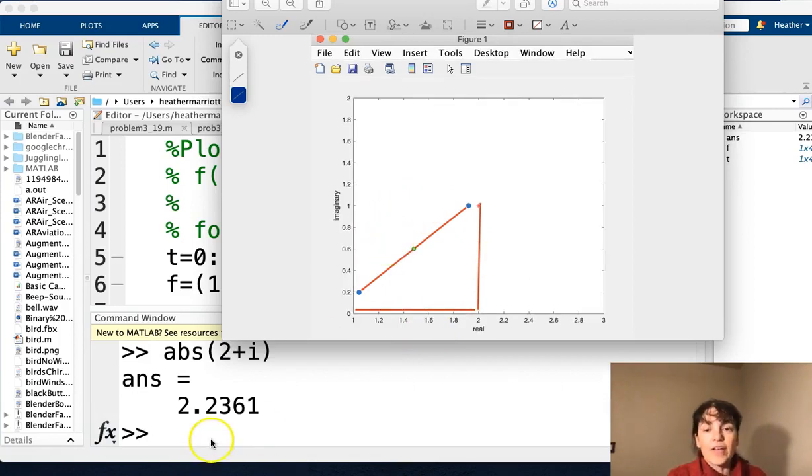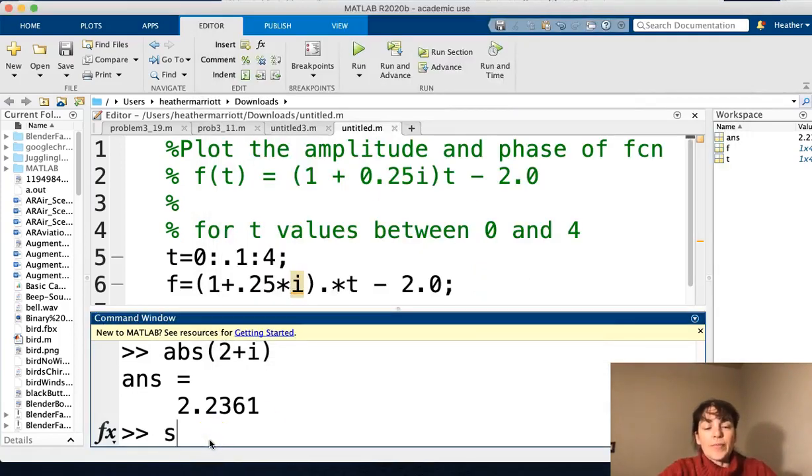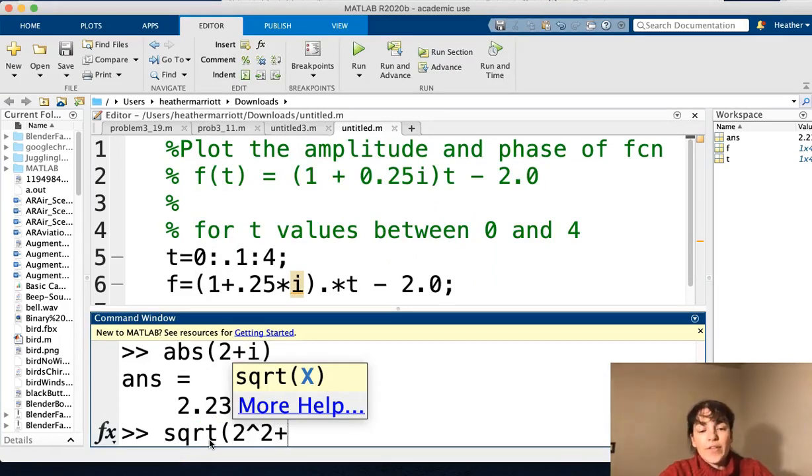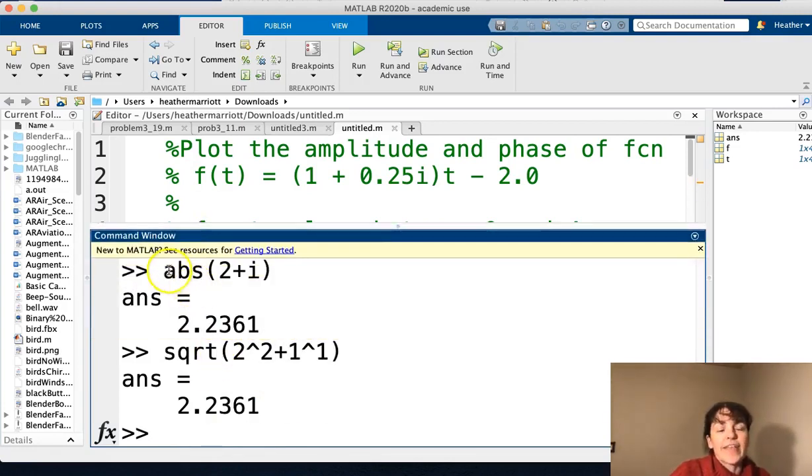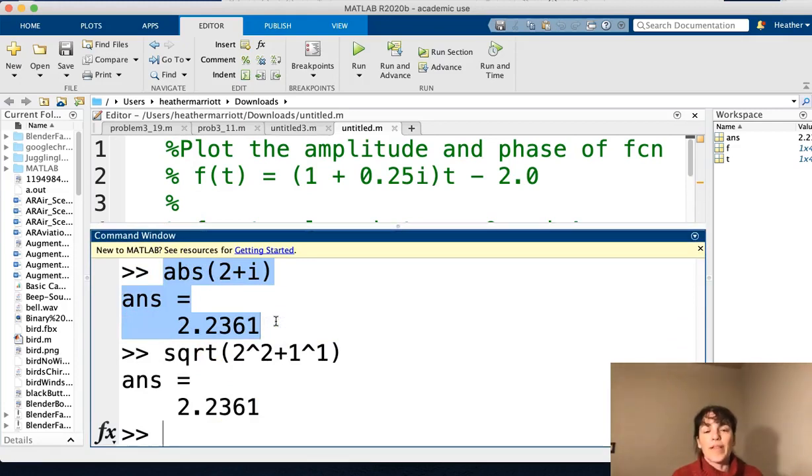So to figure out this, I could say it's going to be the square root of 2 squared plus 1 squared, or the square root of 5. And that happens to be the same thing that we got when we just did the absolute value of that complex number.